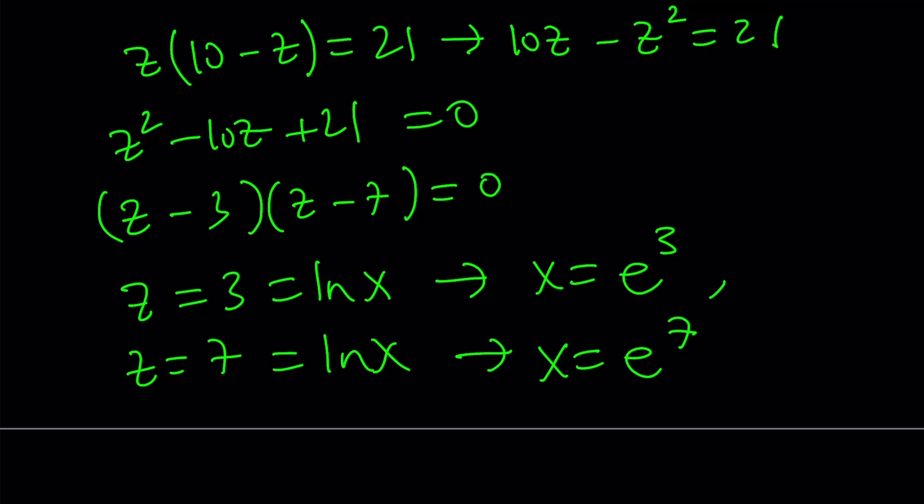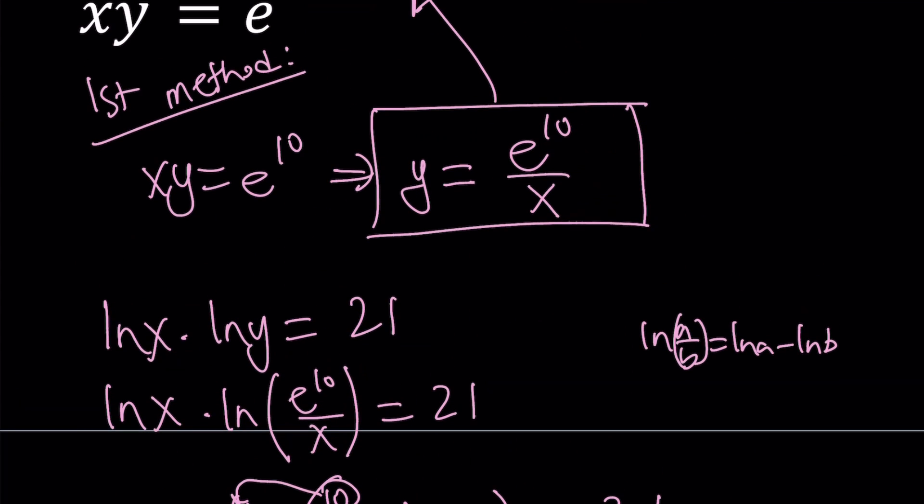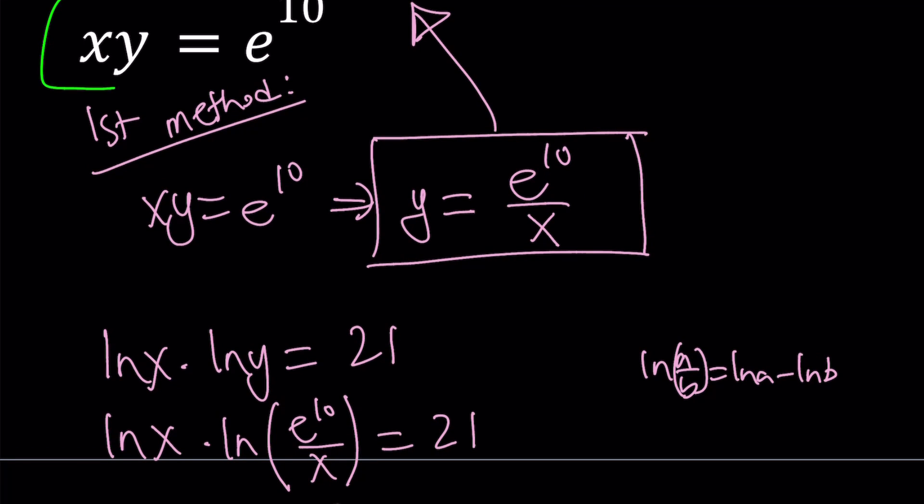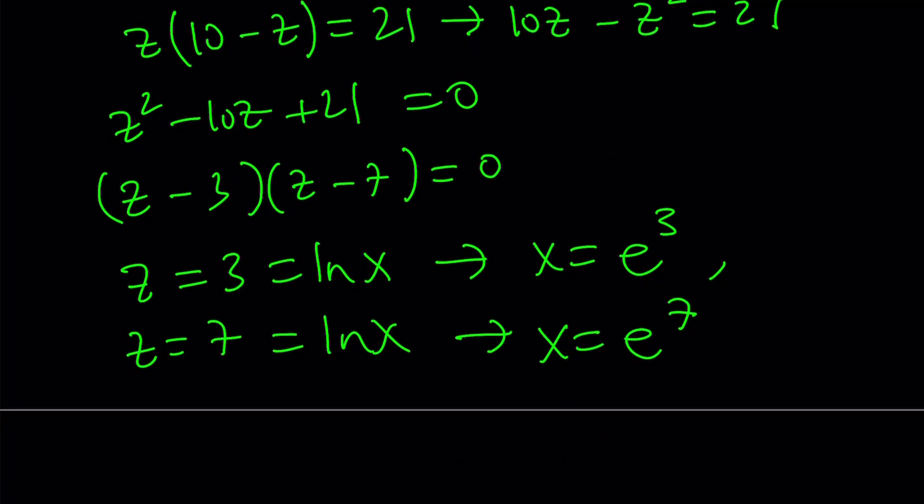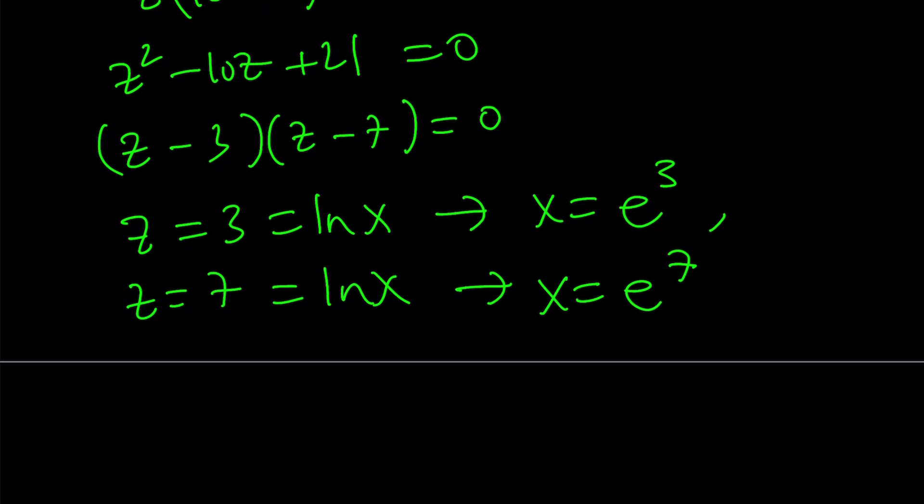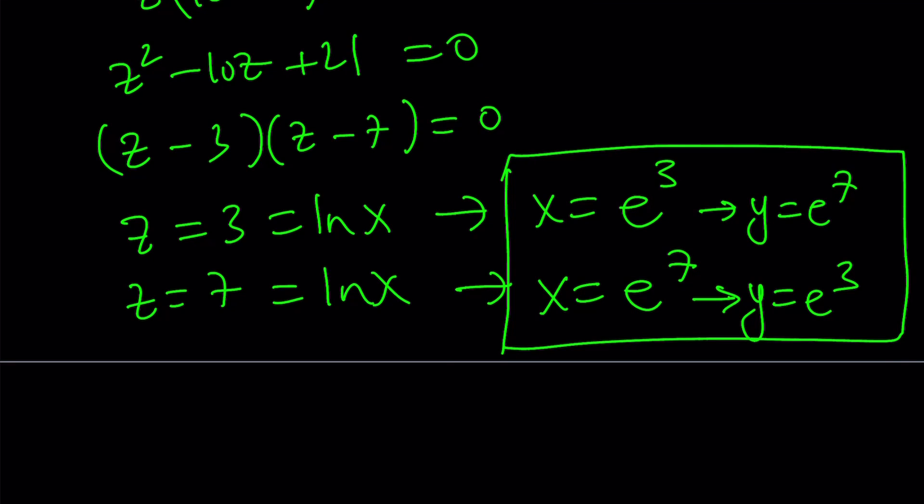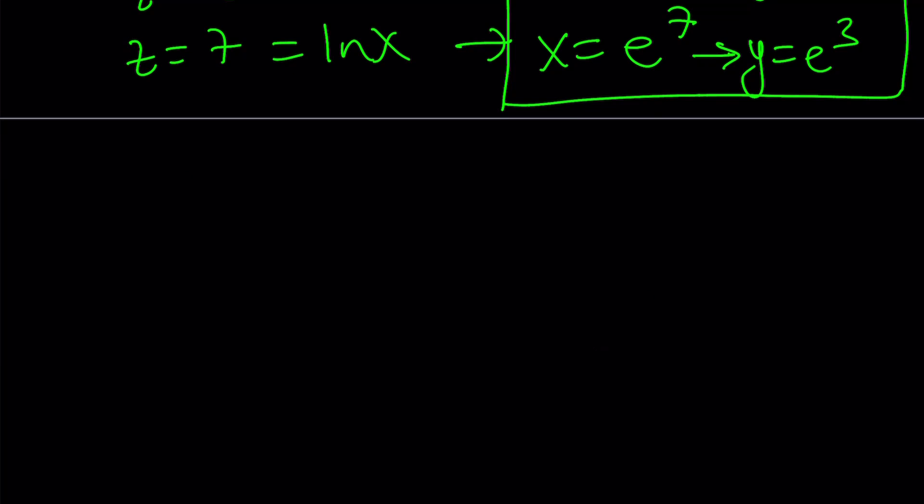Now remember, their product is e to the power 10. So if you know one of them, the other one is very easy to evaluate. For example, if x is e to the power 3, then from here we get y equals e to the power 7. If x is e to the power 7, then y must be e to the power 3. So those are going to be the two solution pairs. Let's go ahead and take a look at the second method.